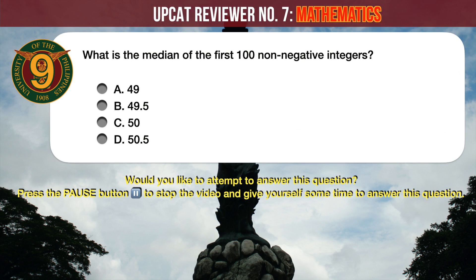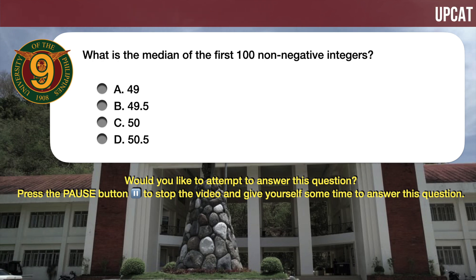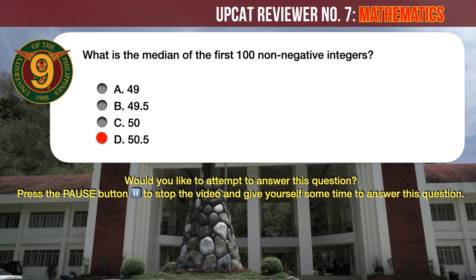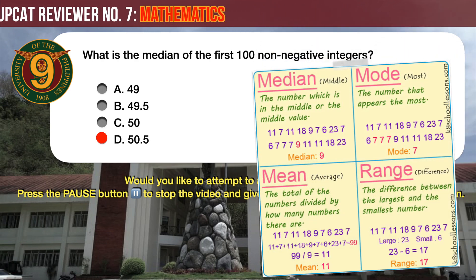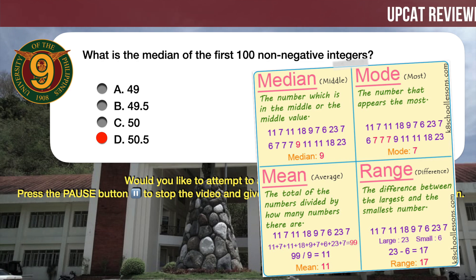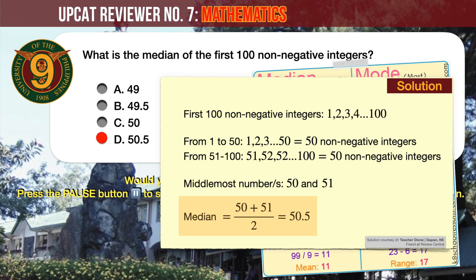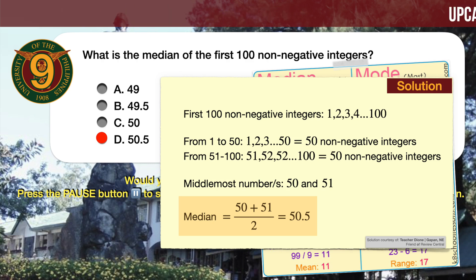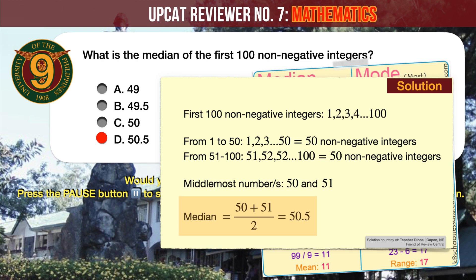Question number 9. What is the median of the first 100 non-negative integers? A: 49. B: 49.5. C: 50. D: 50.5. The correct answer is D, 50.5. The median is the middle value. The first 100 non-negative integers are 1, 2, 3, all the way to 100. From 1 to 50 there are exactly 50 integers, and from 51 to 100 there are also exactly 50 integers. The two middlemost numbers are 50 and 51, so the median is their average, which is 50.5.